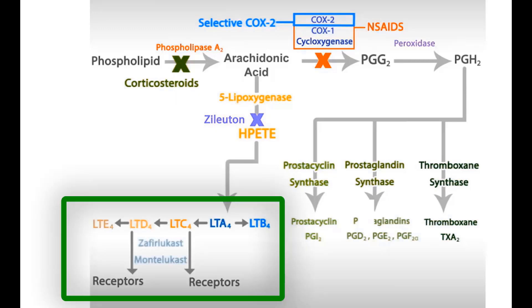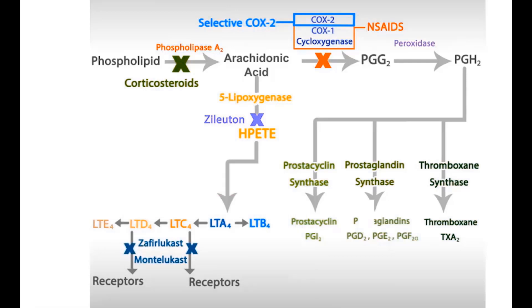Finally, zafirlukast and montelukast are selective competitive inhibitors of leukotriene C4, D4, and E4 receptors.